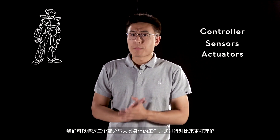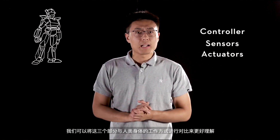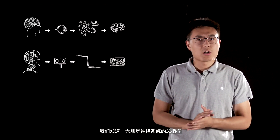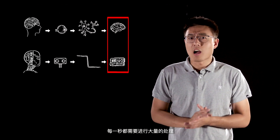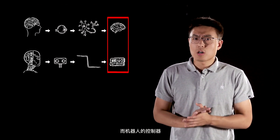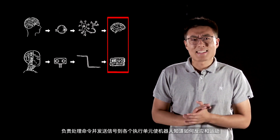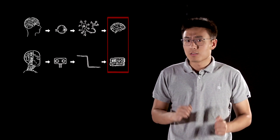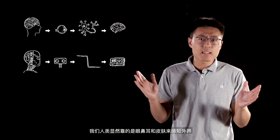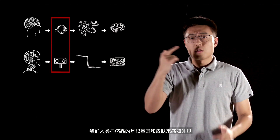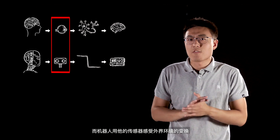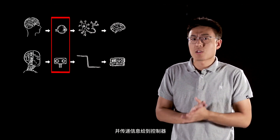For better understanding, we can compare the structure of a robot to a human body. The controller is like the brain — the center of the nervous system — processing instructions and sending signals to direct how the robot reacts and moves. Sensors are like human sensory organs: we sense the outside world through our eyes, nose, ears, and skin, while robot sensors detect environmental changes and transmit information to the controller.